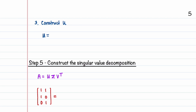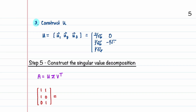Now that we have all three u vectors, we construct matrix U with columns u1, u2, and u3: [2/root 6, 0, -1/root 3; 1/root 6, -1/root 2, 1/root 3; 1/root 6, 1/root 2, 1/root 3].